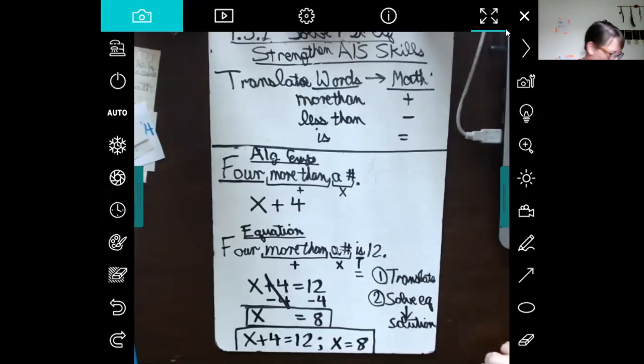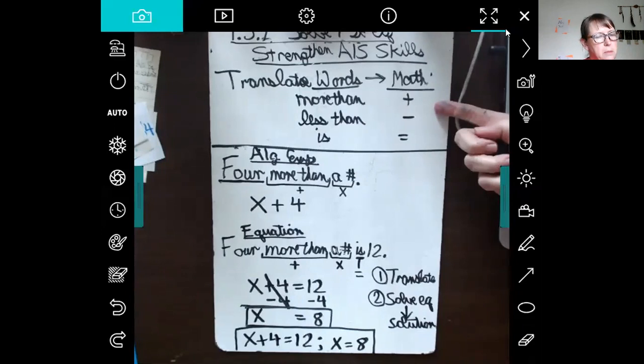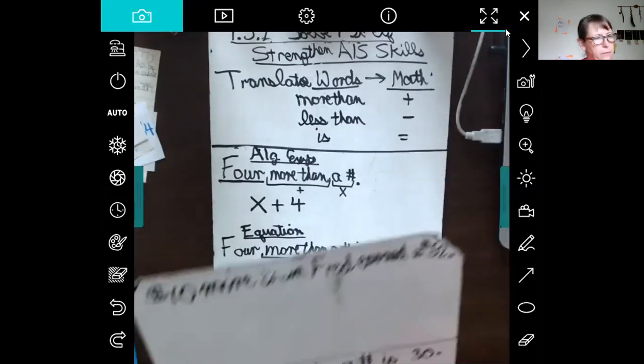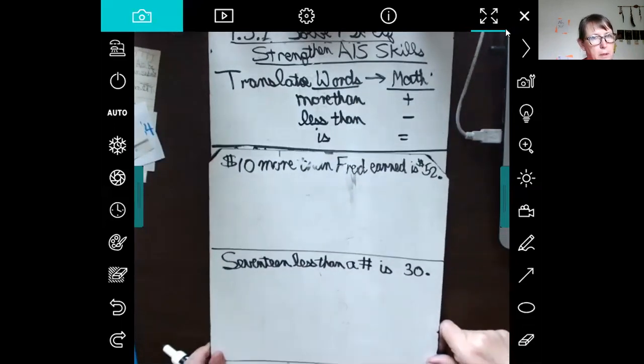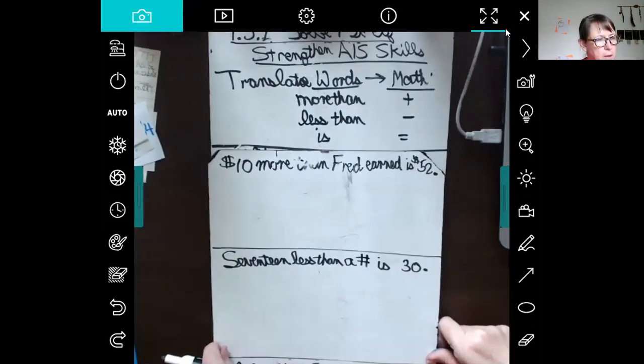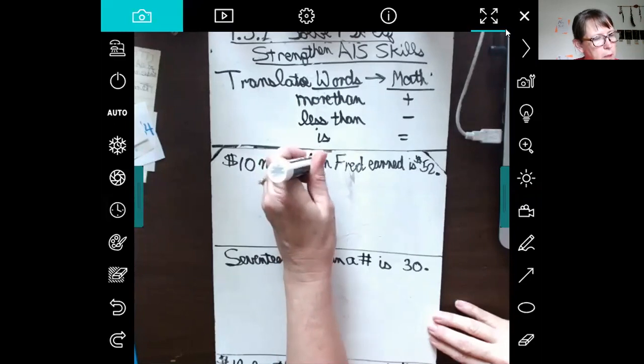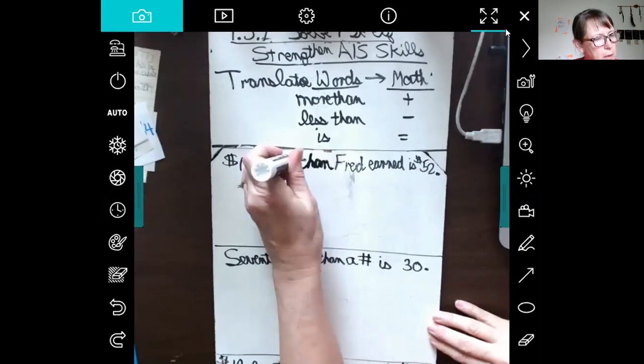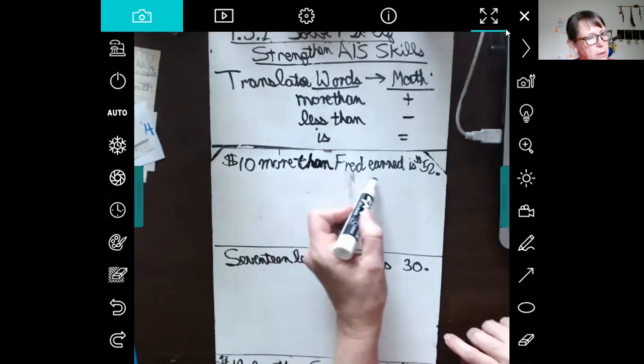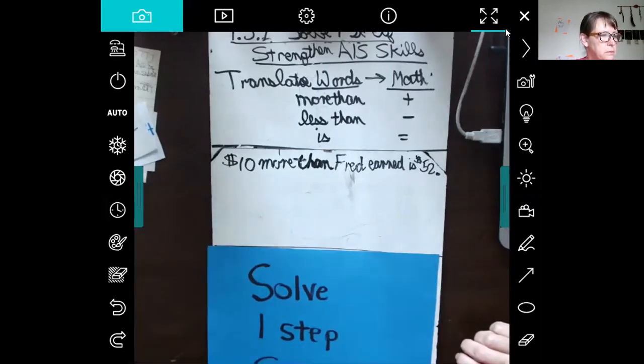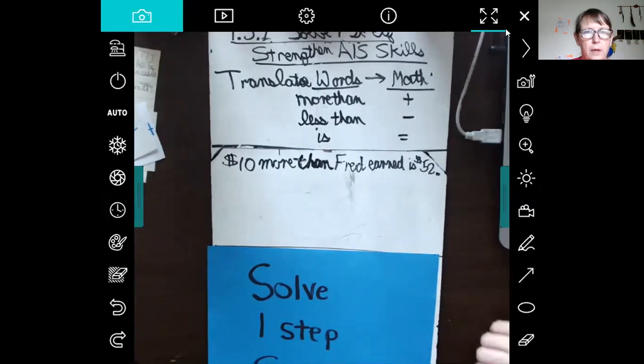Okay, I've got a board with a few more problems. Remembering that 'more than' means plus, 'less than' means minus, 'is' means equals. Here we go. Actually, why don't you stop or pause the video and try this one right here. It says $10 more than Fred earned is $52. Pause and try that.